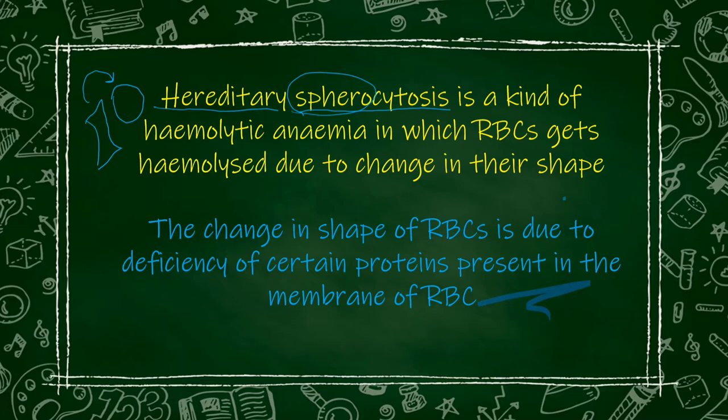Usually the shape of RBC is bi-concave. Due to stability being disturbed, the bi-concave shape of RBC converts into a spherical shape. The reason RBC has its shape is so that it can easily pass through the capillaries of the spleen without destruction.